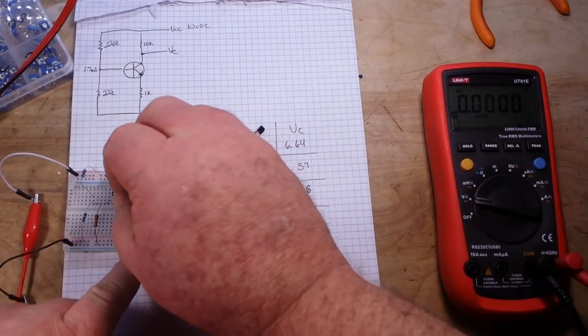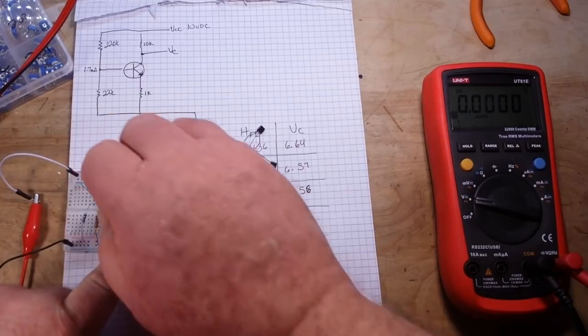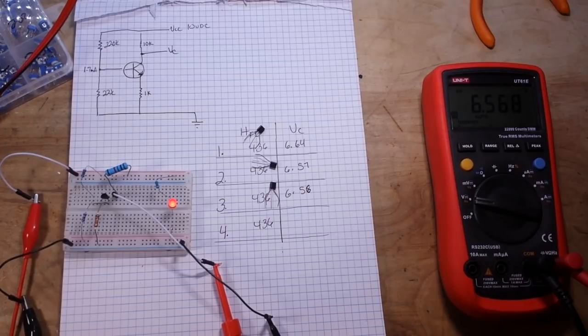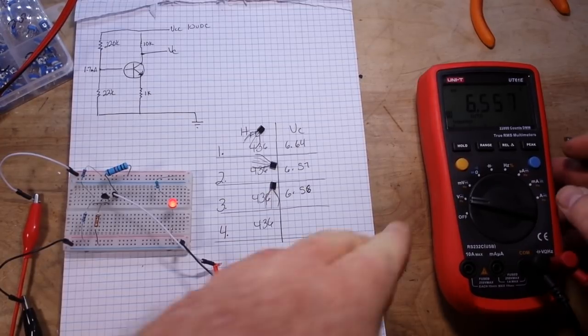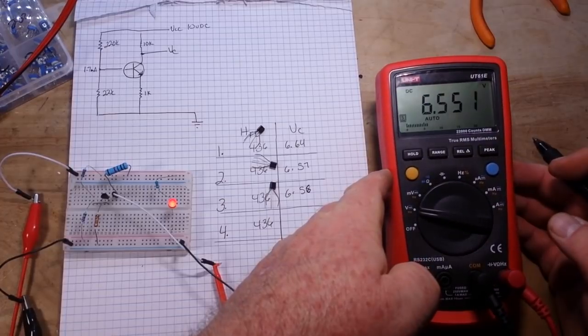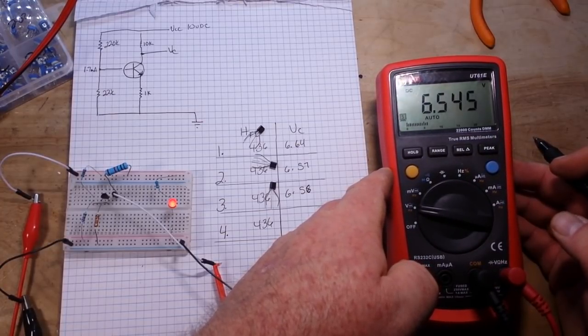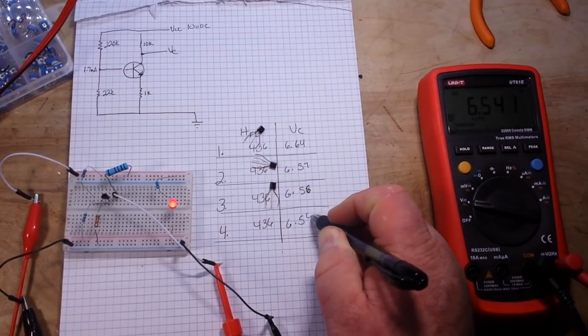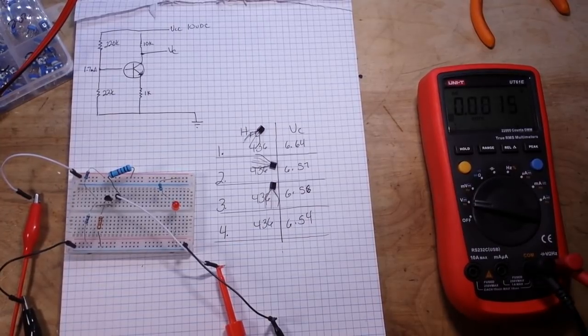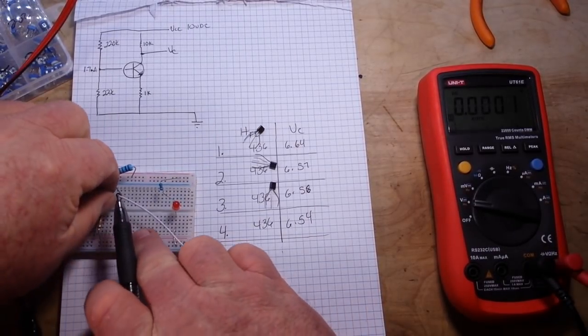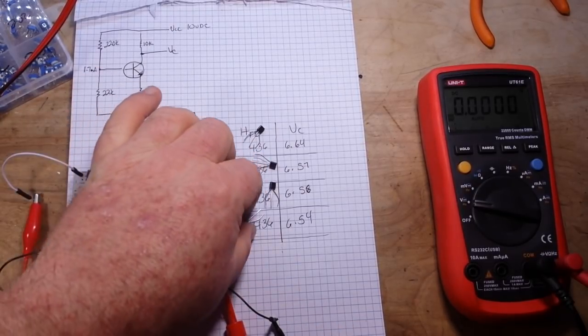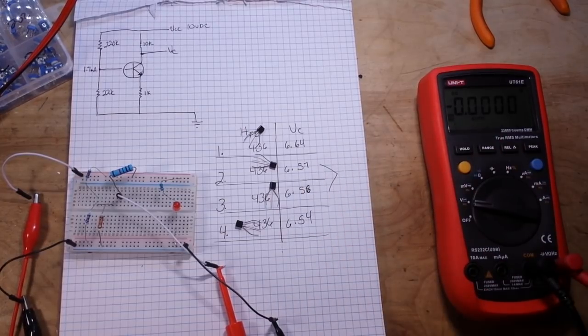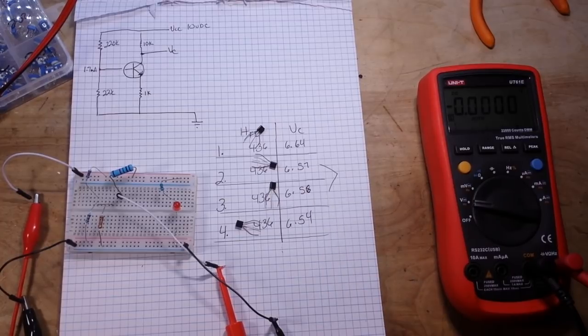And our final one, numero cuatro, number four. Settle there for a second. Six point five four. We'll call it six point five four. All right, so real quick here at home we checked four transistors with matching betas and as far as I'm concerned that's a pair right there: six point five seven, six point five six.